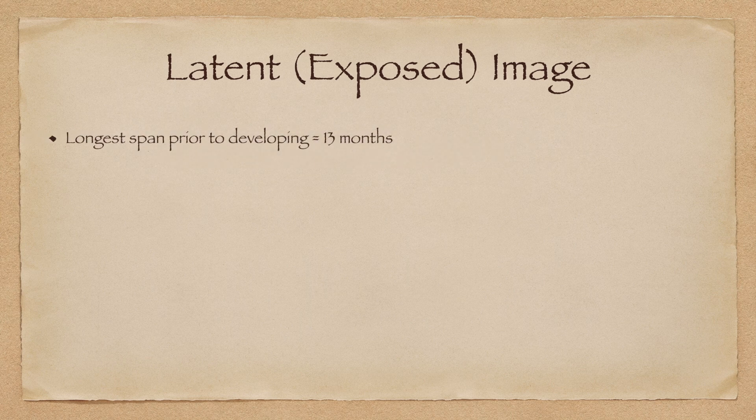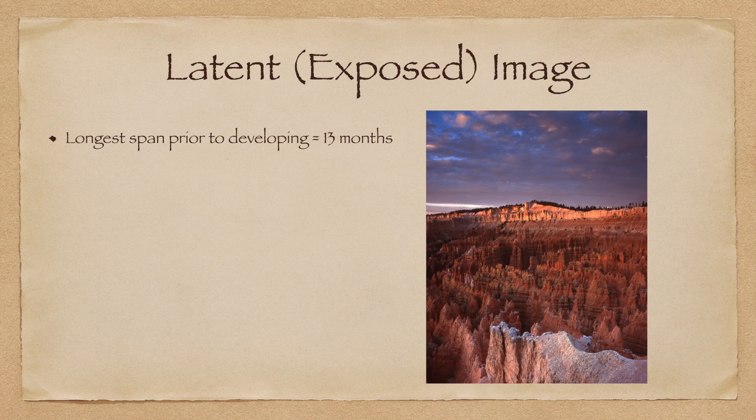The last thing I'd like to report is the longest time frame that I have waited to develop an exposed piece of film. At the end of the second time that I processed my slide film, I had about six pieces of film that I couldn't develop because I didn't have sufficient chemistry, so I saved the exposed film for the next run in June 2016. The longest span of time from when I took the image to when I developed the film was 13 months. It is important to note that I kept the film frozen during that entire span of time. This is the image that waited 13 months to be developed — as you can see, it turned out just fine.